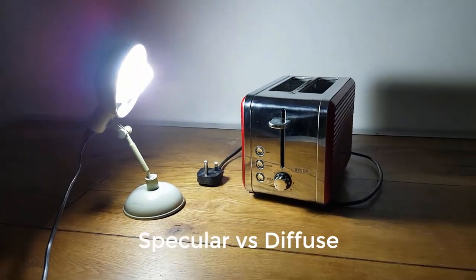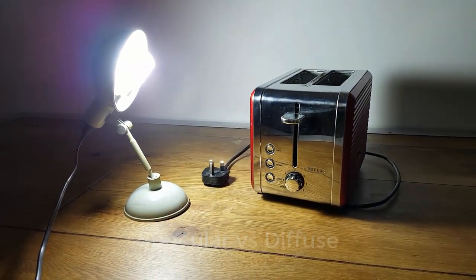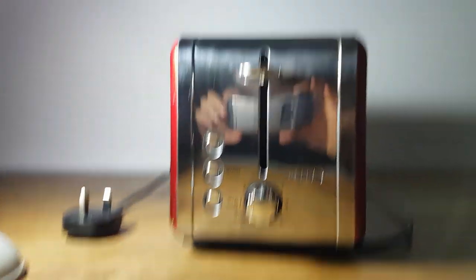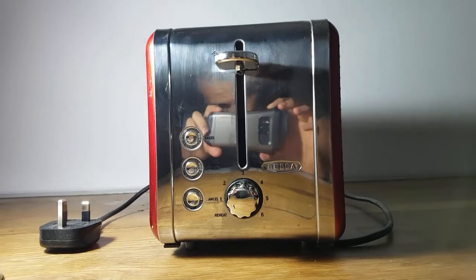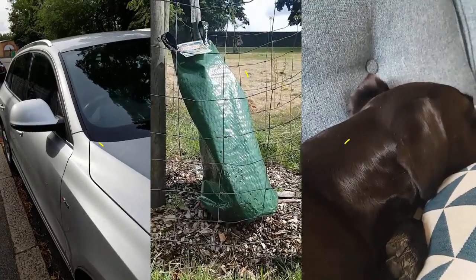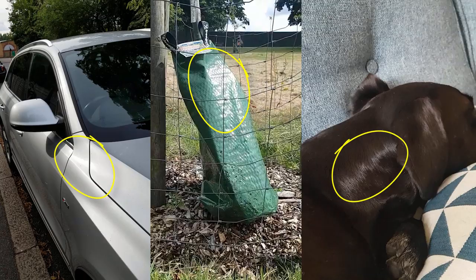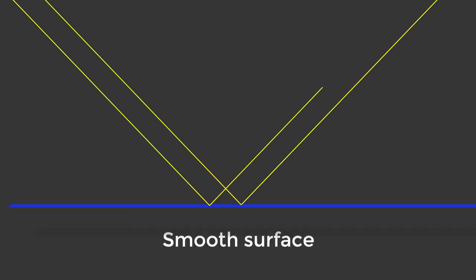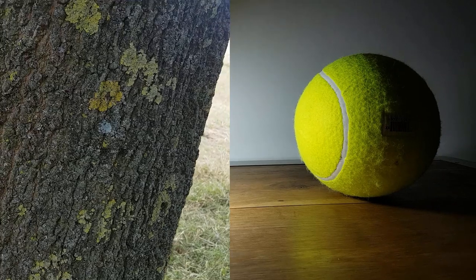Specular reflection is what you normally think of when you say the word reflection — your face in the mirror, the really bright bits on something shiny. It just means that light rays are bouncing off a smooth surface, smooth at the microscopic level, so that the light rays bounce off the surface like this.